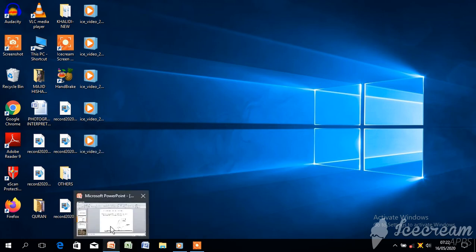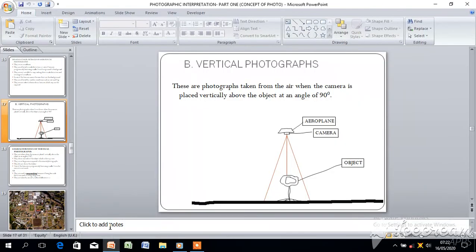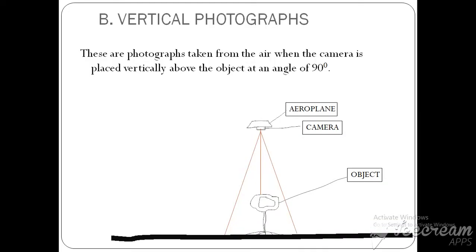Another type of photograph is what we call a vertical photograph — that is the second type. Vertical photographs are photographs taken from the air when the camera is placed vertically above the object at an angle of 90 degrees. They are normally taken from the air.